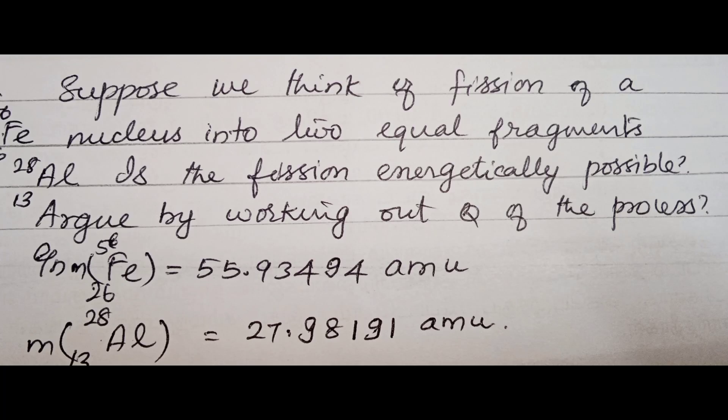Suppose we think of a fission of a Fe-56 nucleus into two equal fragments, Al-13 (A=28). Is this fission energetically possible? Argue by working out the Q-value of the process. Mass of Fe-56 is equal to 55.93494 AMU. Mass of Al-13 (A=28) is equal to 27.9819 AMU.